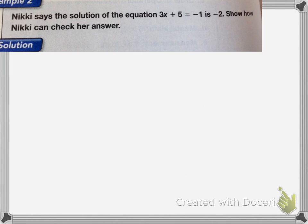This one, Nikki says the solution of the equation 3x plus 5 equals negative 1 is negative 2. So we're going to replace our x variable for negative 2.